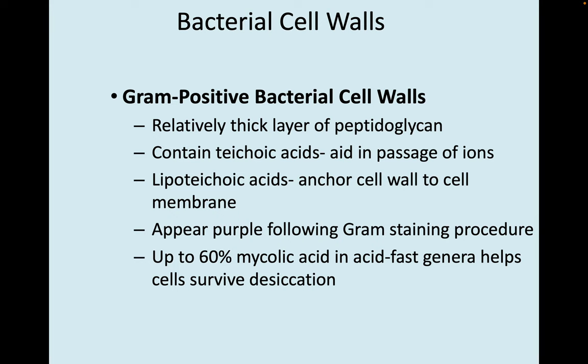Bacteria also have cell walls outside of their cell membranes. There are two major different types. Gram-positive bacterial cell walls have a relatively thick layer of peptidoglycan and contain teichoic acids, which aid in the passage of ions. Lipoteichoic acids anchor the cell wall to the cell membrane, and they appear purple in a gram-stain procedure. Up to 60% mycolic acid in acid-fast genera helps the cells survive desiccation.